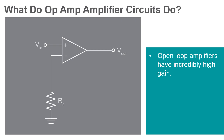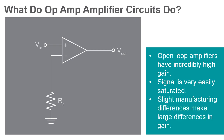Open-loop amplifiers do have incredibly high gain, but their usefulness is limited in electronics as the output of an open-loop amplifier is saturated so easily. Minute differences in the manufacturing process mean that gain properties of op-amps are similar but not completely identical. Without feedback from the output, these small differences become very large, making the output of an open-loop op-amp unpredictable.